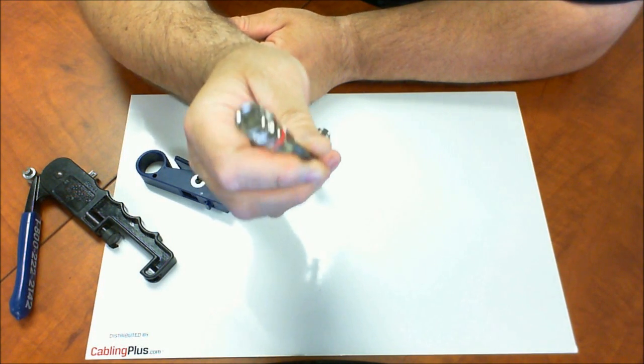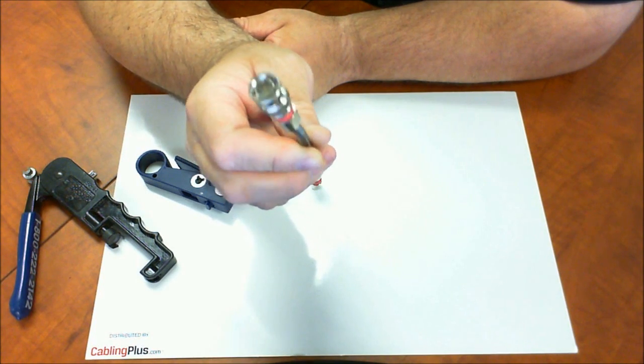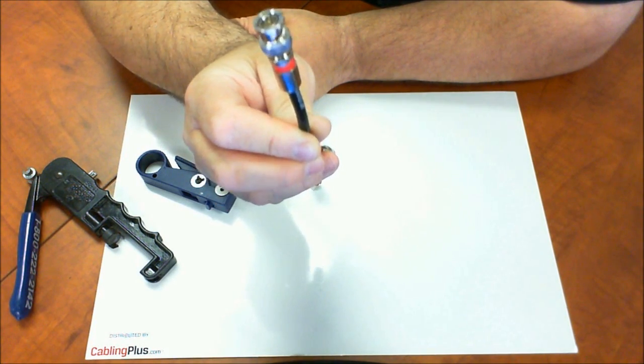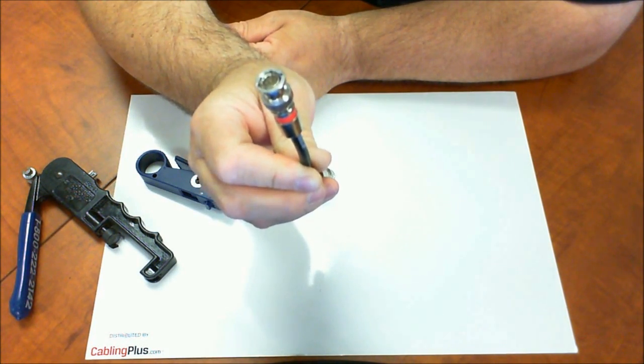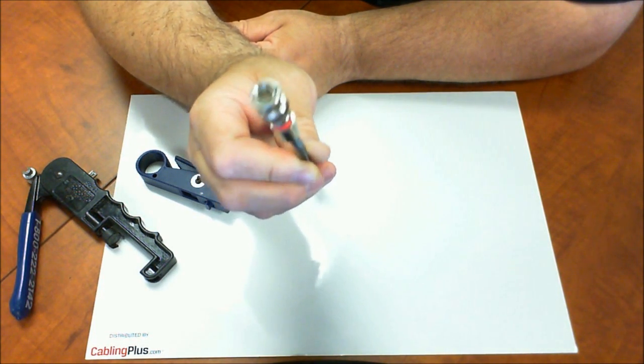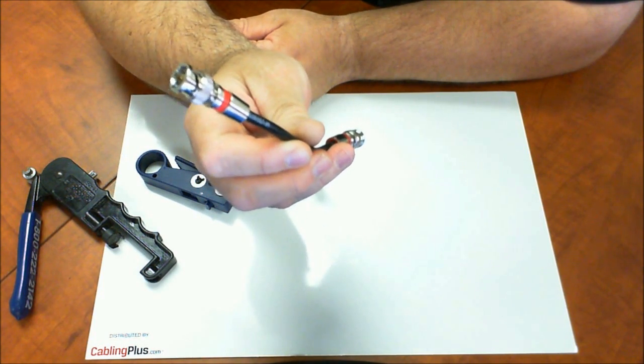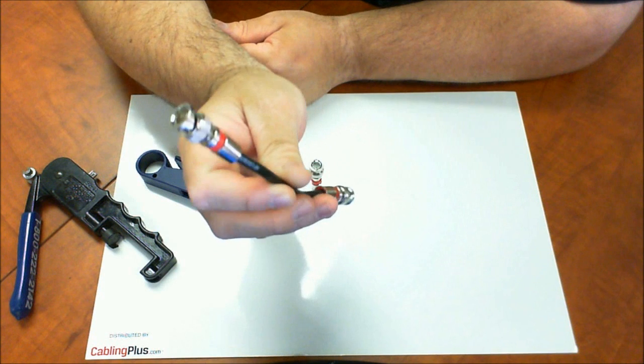Again, you've got about 65 pounds of pull force so this connector isn't going anywhere. The reality is in most CCTV applications, 75% of camera problems are connector related. So, this is going to ensure that each cable is terminated properly the first time. I hope this video has been helpful for you and I hope all your CCTV installations are successful. Have a great day.